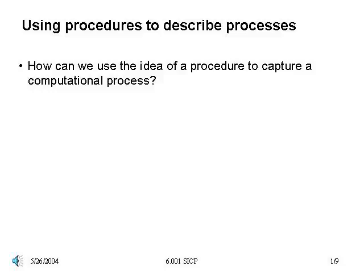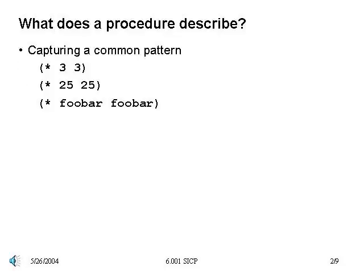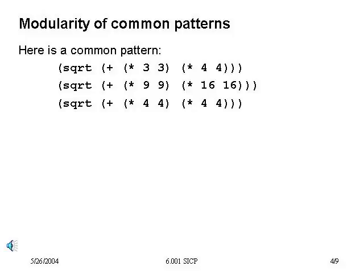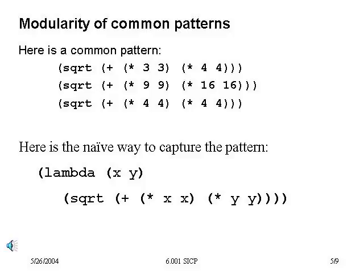Let's look at some examples of describing processes in procedures. One useful way of thinking about a procedure is as a means of generalizing a common pattern of operations. Consider three expressions: the first two are straightforward, the third is more general since foobar is presumably a name for some numerical value. Each of these is basically a specific instantiation of the process of multiplying a value by itself — the process of squaring. So we can capture this by giving a name to the part of the pattern that changes, identifying that name as a formal parameter, and capturing the pattern as the body of a lambda expression. For a more complex pattern with two things that vary, we will need two parameters to capture it.